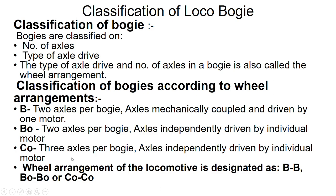So in all three bogie types, there are individual motors driving the individual axles and wheels. The wheel arrangement of the locomotive is designated as BB, BoBo, and CoCo type.